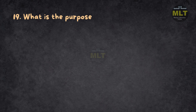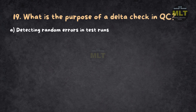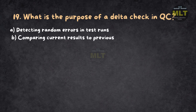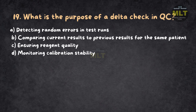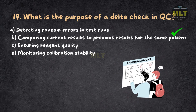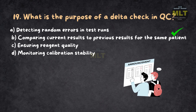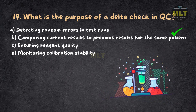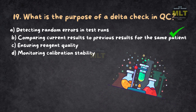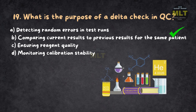Question 19: What is the purpose of a delta check in QC? a. Detecting random errors in test runs. b. Comparing current results to previous results for the same patient. c. Ensuring reagent quality. d. Monitoring calibration stability. Correct answer: b. Comparing current results to previous results for the same patient. Delta checks identify discrepancies by comparing a patient's current test results to previous values, ensuring clinical consistency. This QC tool helps catch errors like sample mix-ups or instrument issues. It doesn't monitor reagents or calibrations directly.